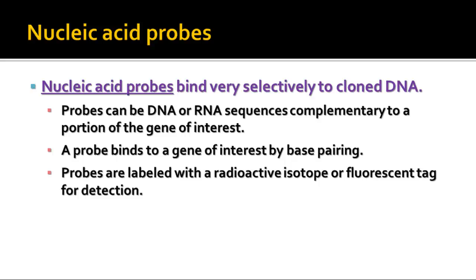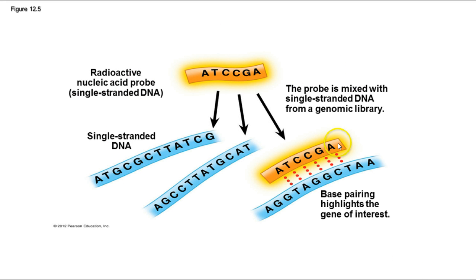Another tool commonly used in genetic engineering is nucleic acid probes. These probes bind selectively to cloned DNA — they can be either DNA or RNA sequences complementary to part of the gene we're looking at, and they bind by base pairing. The probes are labeled with a radioactive isotope or a fluorescent tag, which lets us physically see where those genes are and whether they've been picked up by the target cell. This highlights the gene of interest and concludes the lesson on gene cloning.